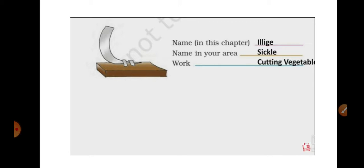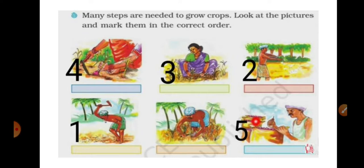On page 118, you have to arrange the steps in order. I have given the numbers: first is loosening the soil, second is sowing the seeds, third is removing the weeds, fourth is harvesting. You have to write what they are doing — I have given the numbers, but you have to write the descriptions yourself.